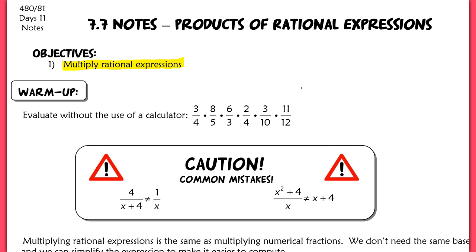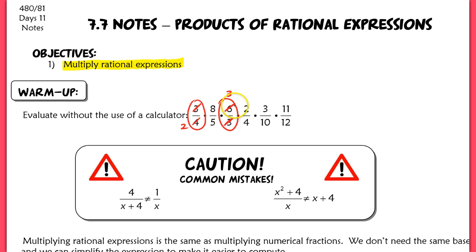I don't necessarily need common bases when I multiply fractions, and I can also mix up the order. So 3 fourths times 8 fifths is the same as 8 fifths times 3 fourths — multiplication is commutative. That means I can look at 3 fourths times 6 thirds first. Those 3s will cancel with each other, and that 4 and 6 will simplify — that 4 becomes a 2 and the 6 becomes a 3 in the numerator.